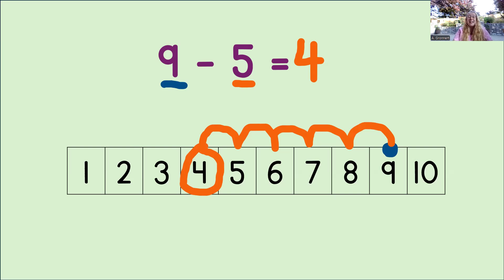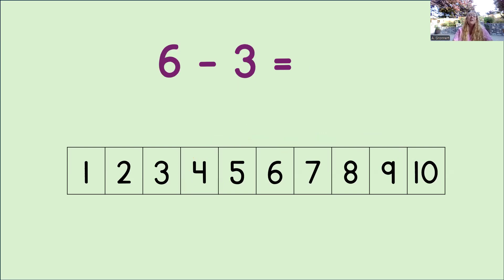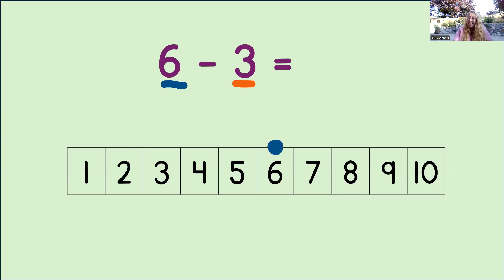Great job. Let's try another one. Here we go. What do we do first? Well, first we look at the minuend. That's the number 6. So we mark the number 6 on the number line with a big dot. Then we look at the subtrahend. That's the number 3.